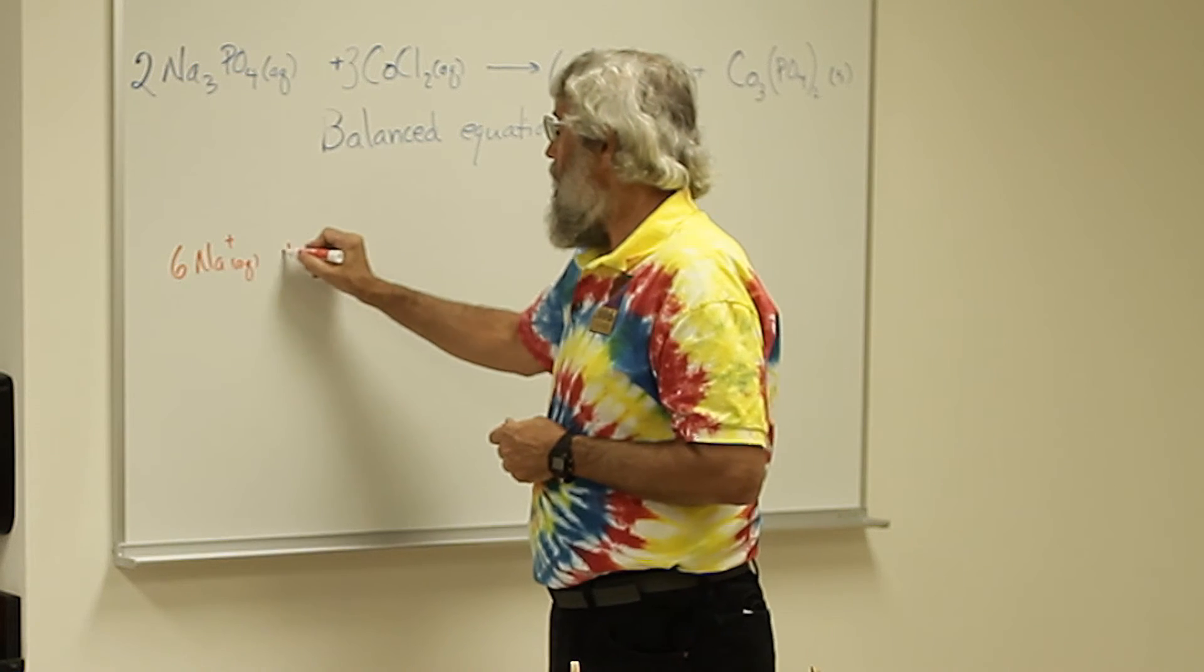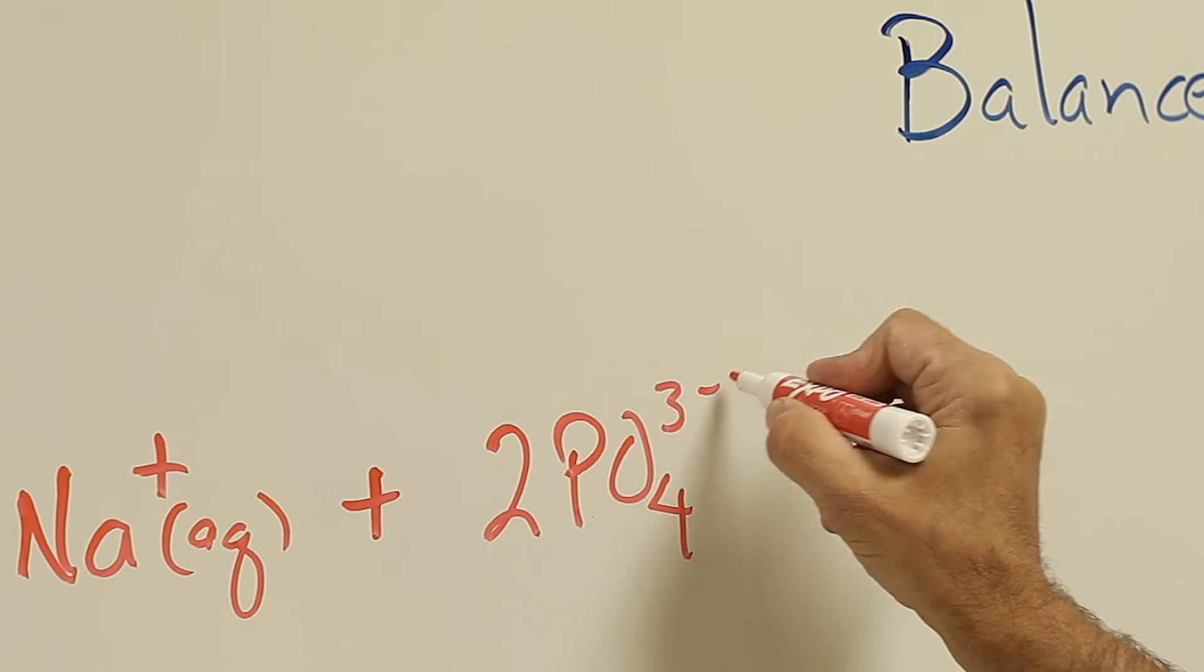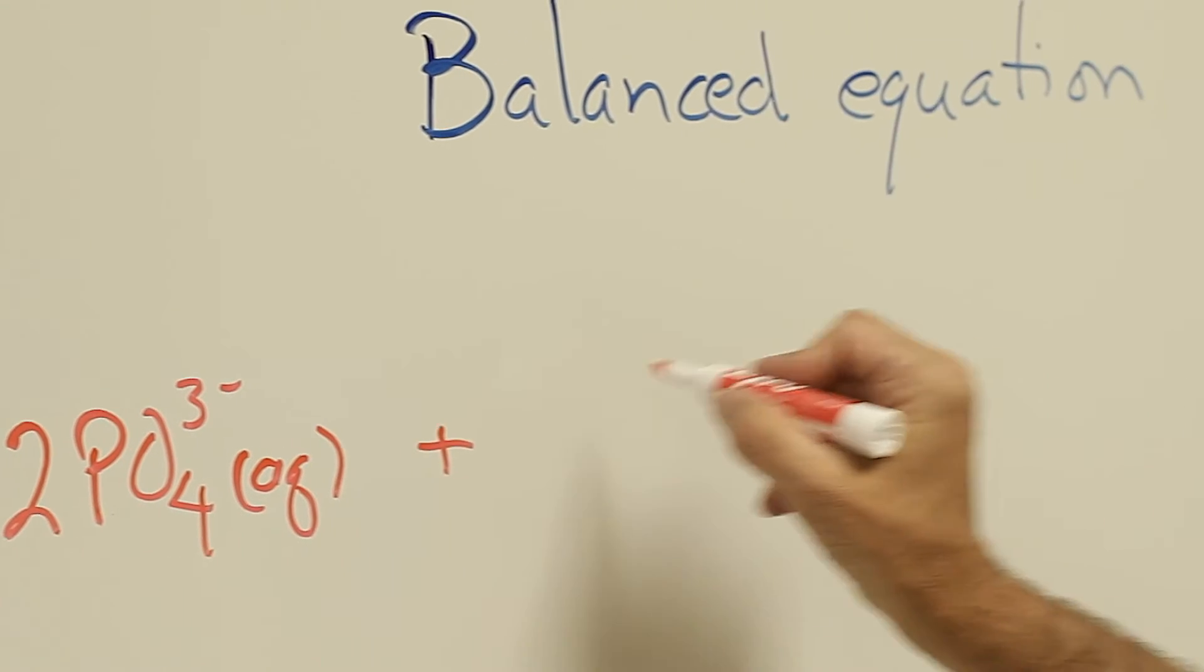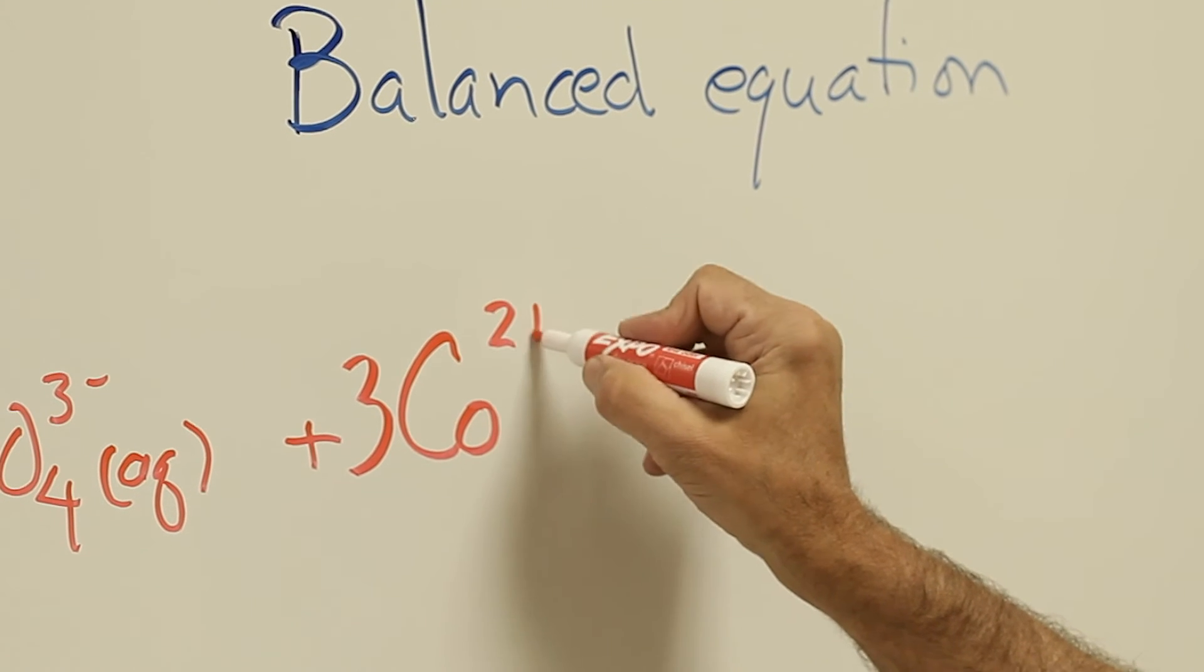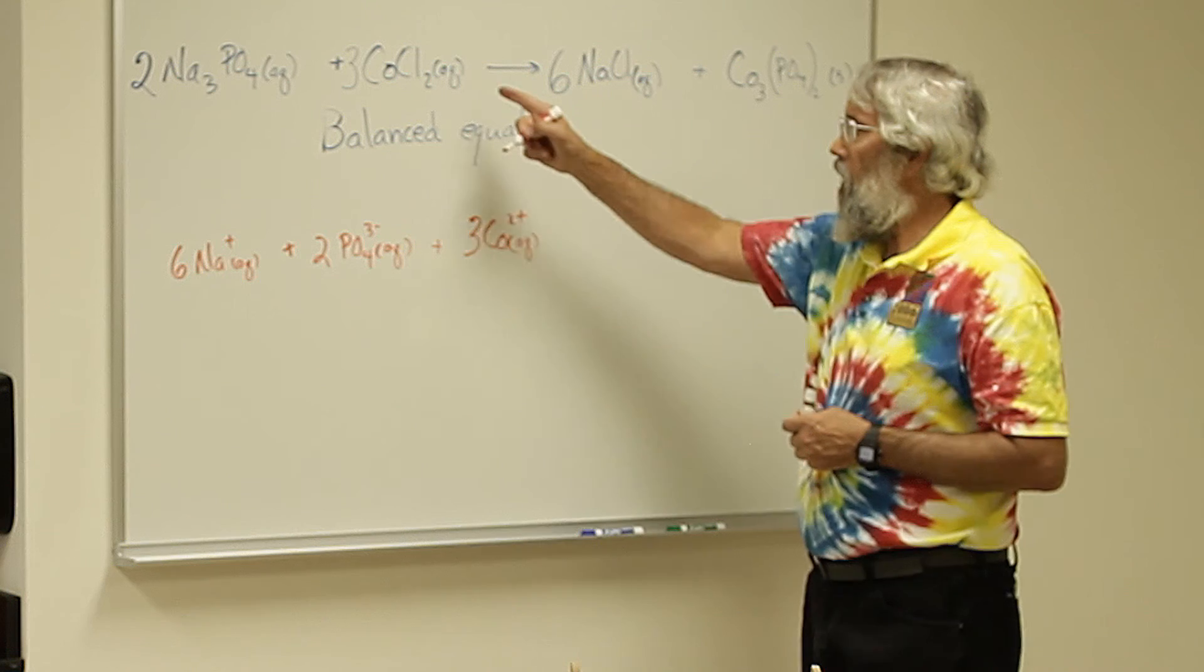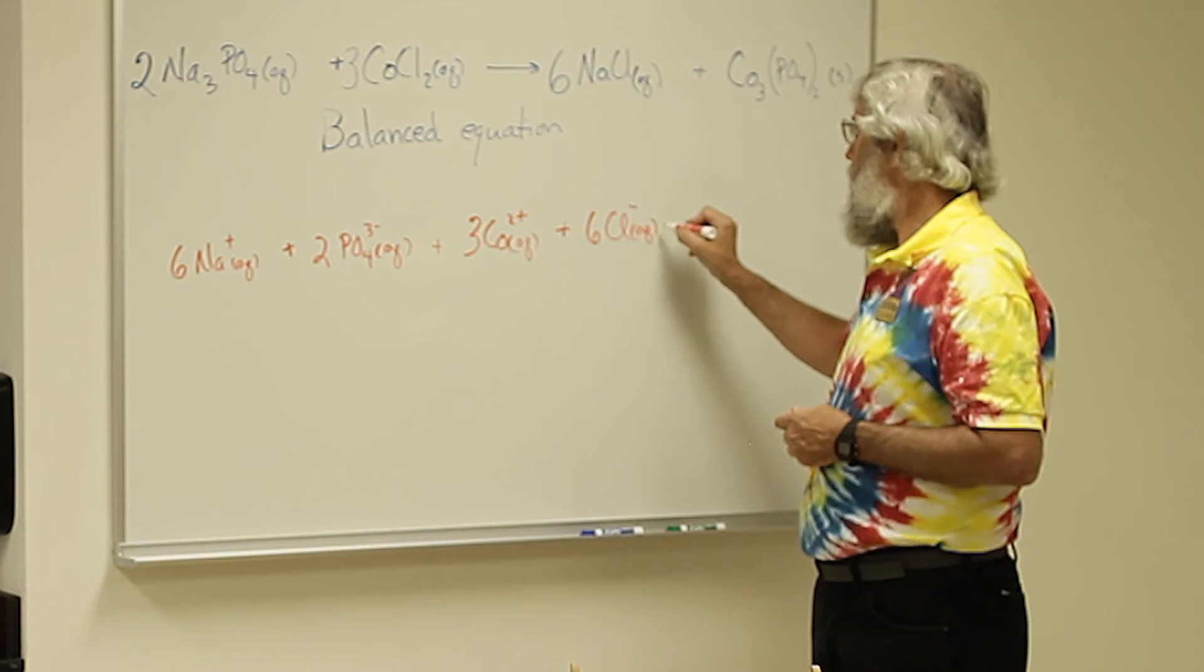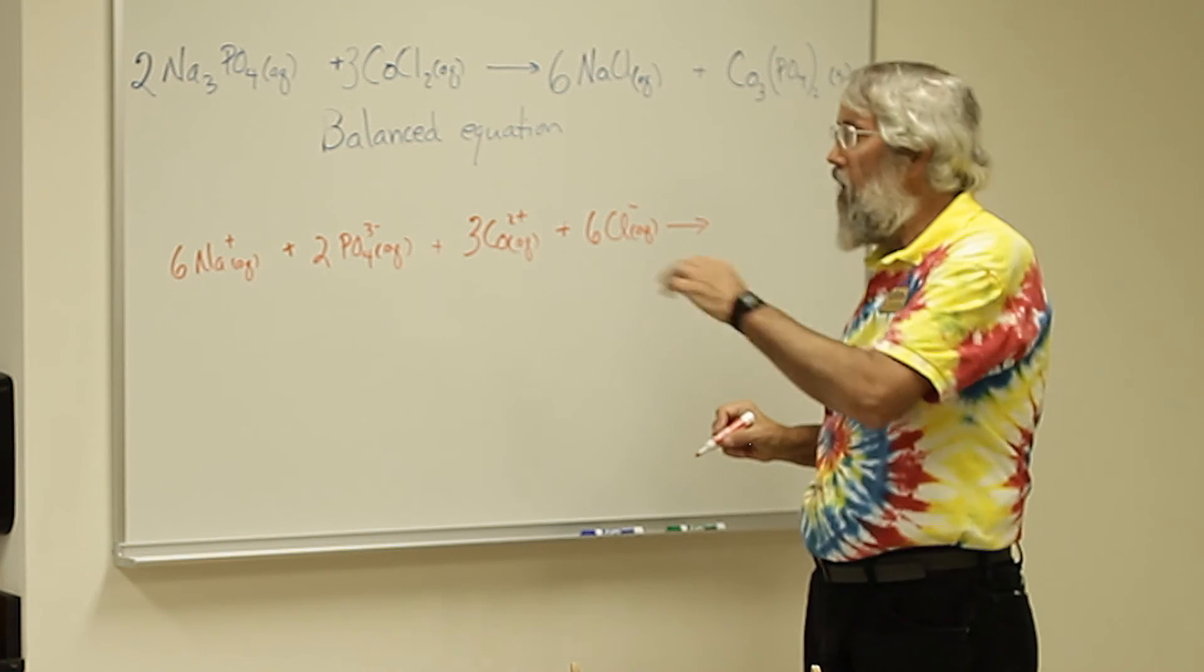Then we have two phosphates, and that phosphate has a charge of minus three. Then we have three cobalts, and that's 2+. Again, in aqueous solution. Six chloride ions. And that takes care of all the ions on the reactant side of the equation.